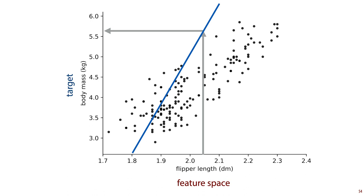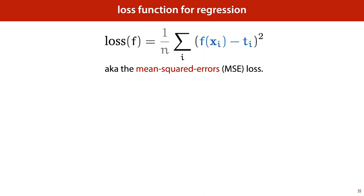The line I've drawn here isn't very good — it predicts much too high a body mass for this flipper length. To determine how good a model is, we must again choose a loss function. The loss function maps a model to a number that expresses how well it fits the data — the smaller the loss, the better. The mean squared error loss is a common choice for regression. We simply take the difference between the model prediction and the target value, square it, sum it over all instances, and divide by the total number of instances to get an average.